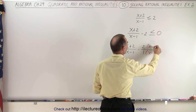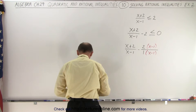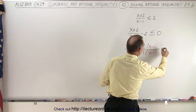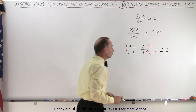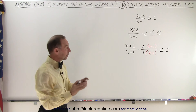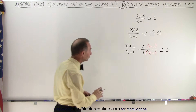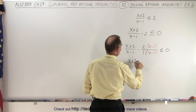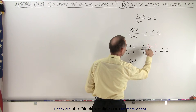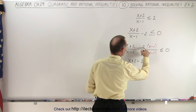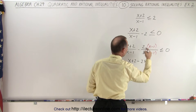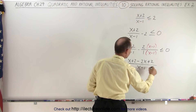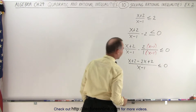Of course, we must do the same to the numerator. And now we set that less than or equal to zero to finish that off. Now we have a common denominator. We have x plus two minus two times x, and minus two times negative one, which is plus two, all divided over the common denominator of x minus one, less than or equal to zero.